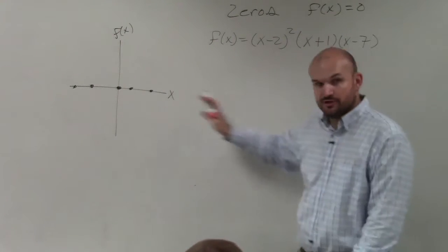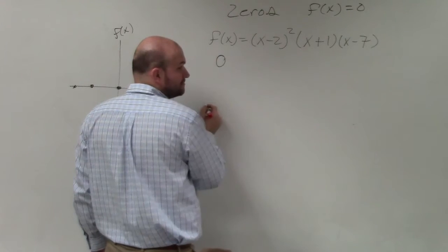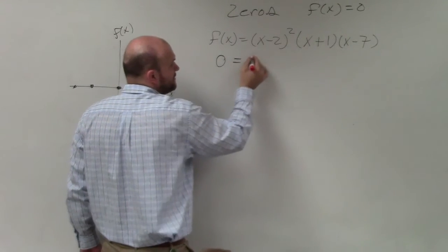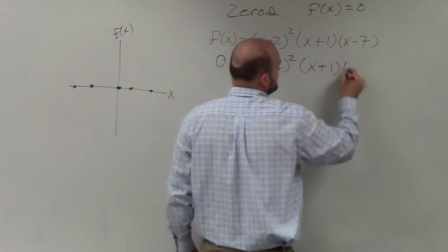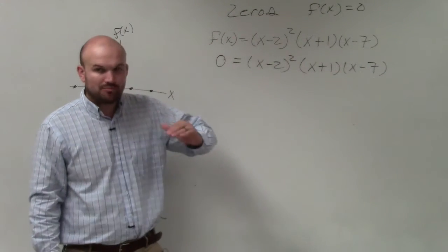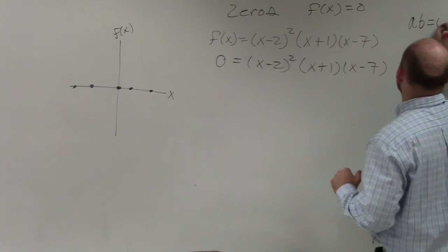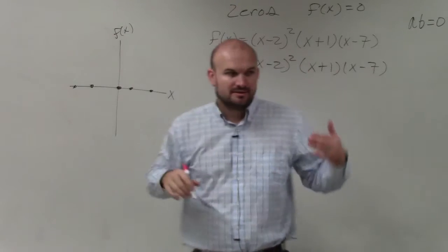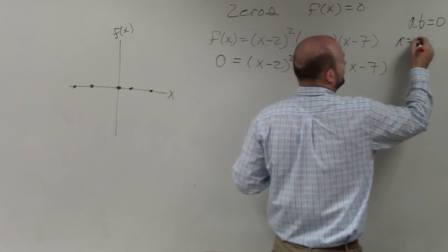All you simply are going to do for these problems is replace f of x with 0. We're looking for the solutions that make f of x equal to 0. By applying the zero product property, if you have two expressions multiplied equal to 0, then you can set them both equal to 0.